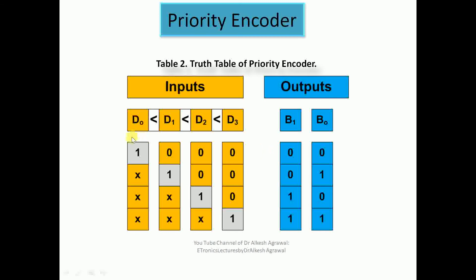So we have four priority-based conditions: when d0 is 1 (d1, d2, d3 = 0) → encoded as 00; when d1 is 1 → encoded as 01, with d0 as don't care and d2, d3 = 0; when d2 is 1 → encoded as 10, with d3 = 0 and d0, d1 as don't cares; and when d3 is 1 → encoded as 11, with d0, d1, d2 all as don't cares. Now let us elaborate this information in the next slide.